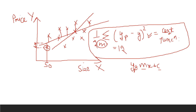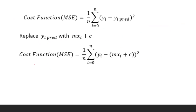I have made a separate video containing an in-depth analysis of the cost function and gradient descent, so you can refer to that video. The cost function used for linear regression is mean squared error. In this equation, you replace y_predicted with mx plus c, and the final cost function equation for linear regression is derived from that.